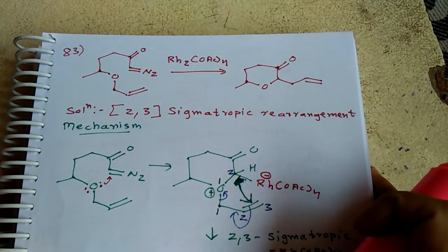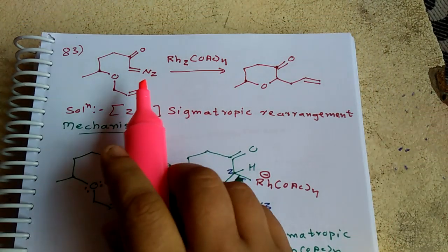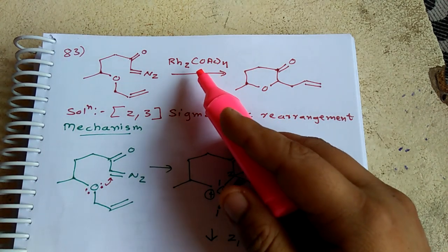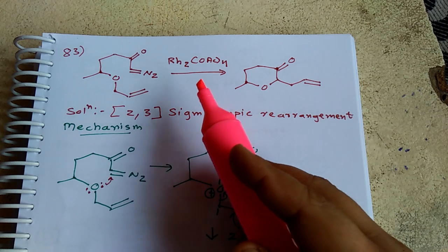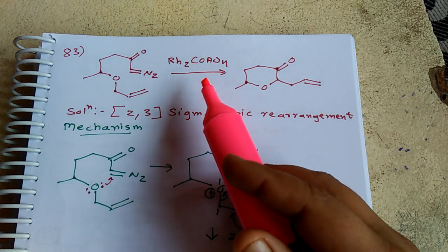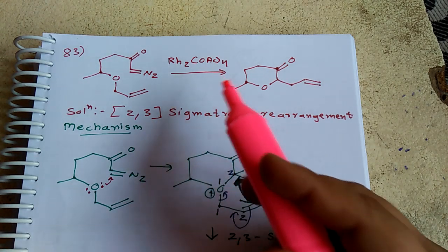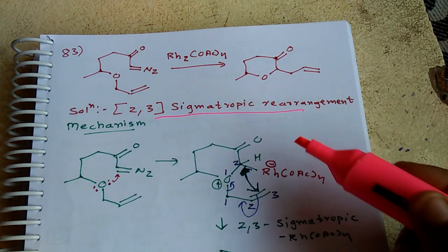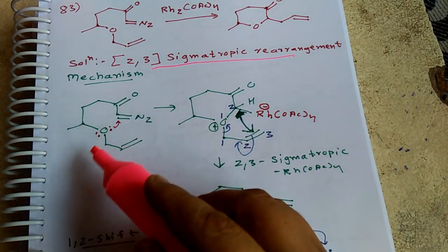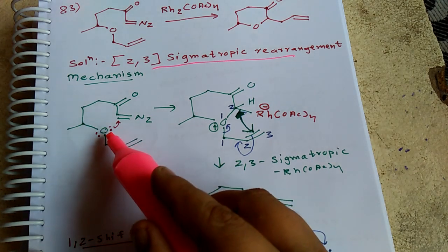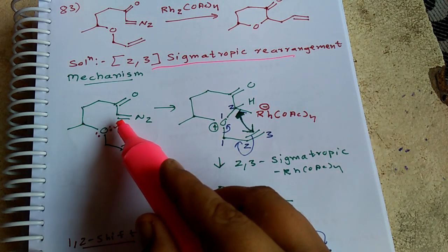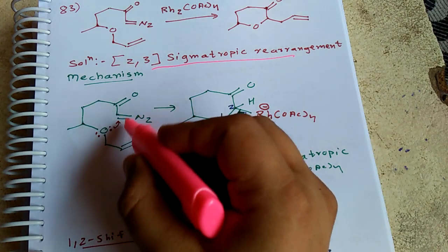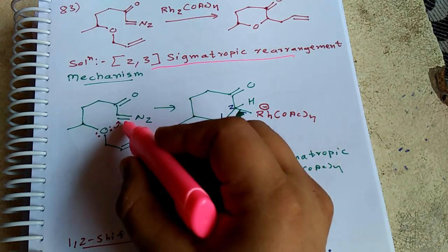The 83rd question: they have given a starting material and a product with a rhodium-catalyzed reaction. We know that rhodium and copper catalysts are commonly used in carbene reactions. The right answer is a 2,3-sigmatropic rearrangement. This carbon acts like a carbene when you draw the resonance form with N2, and this carbon also has a carbene-like structure.